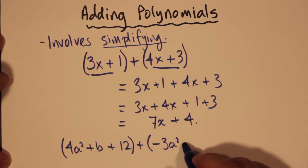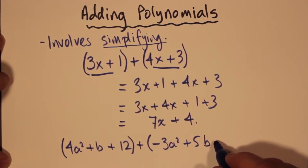It's called negative 3a squared plus 5b minus 11 which is in another set of brackets. And we're just adding the two together.